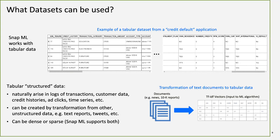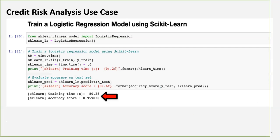Sparse datasets contain many zero values, such as sensor data. Snap ML has significant optimizations for sparse data. Here's a typical tabular dataset — a credit default dataset — which will be used in the live demo. The use case is straightforward: you have your features and your target column, which the model will predict.